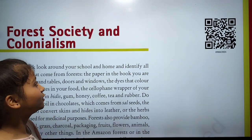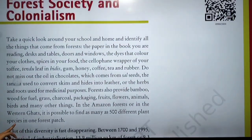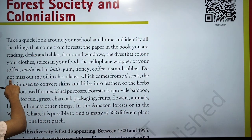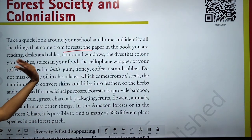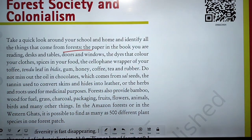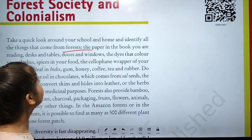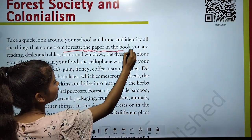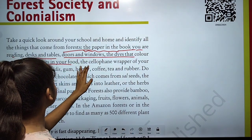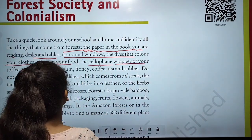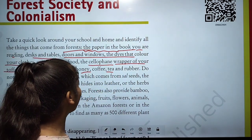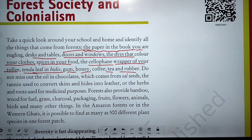This chapter is called 'Forest Society and Colonialism.' Let's take a quick look around your school and home to identify things that come from forests. These include the paper in the books you are reading, desks, tables, doors, windows, dyes that color your clothes, spices in your food, tendu leaves, bidis, gum, honey, coffee, tea, and rubber.